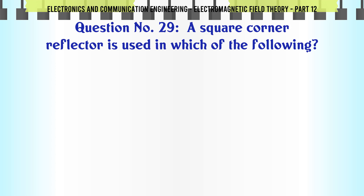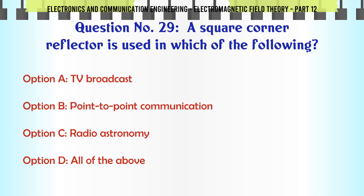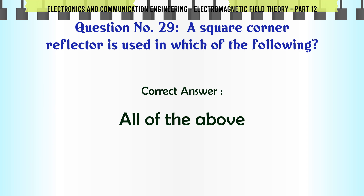A square-corner reflector is used in which of the following? A. TV broadcast, B. Point-to-point communication, C. Radio astronomy, D. All of the above. The correct answer is All of the above.